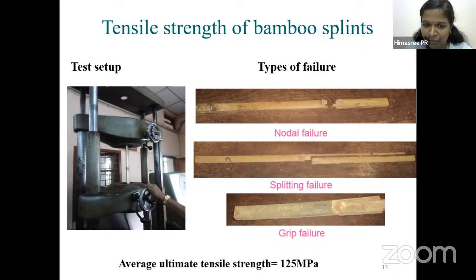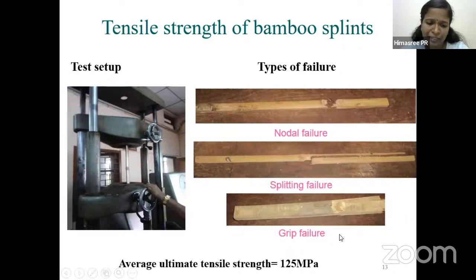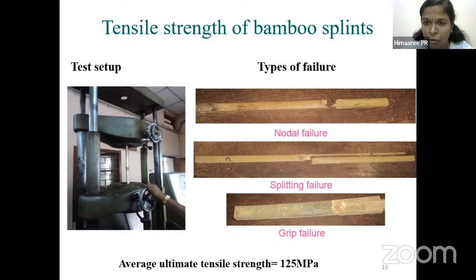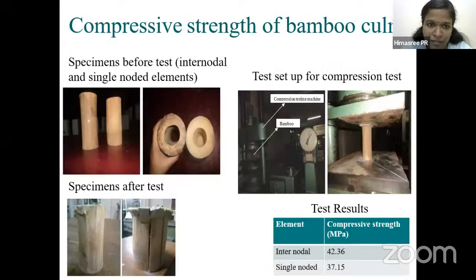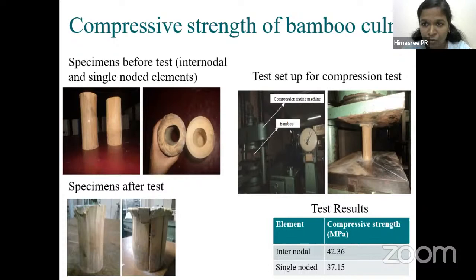From the culms, we made splints of 20 mm width and conducted tension tests in the UTM. The major failure occurred at the node itself, along with some splitting failure. The average tensile strength was found to be approximately 125 MPa — about one-fourth the ultimate strength of mild steel. This is consistent with bamboo being a grass. The modulus of elasticity was around 0.79 × 10⁵ N/mm², and compressive strength was around 40 kN/mm², equivalent to M40 grade concrete.